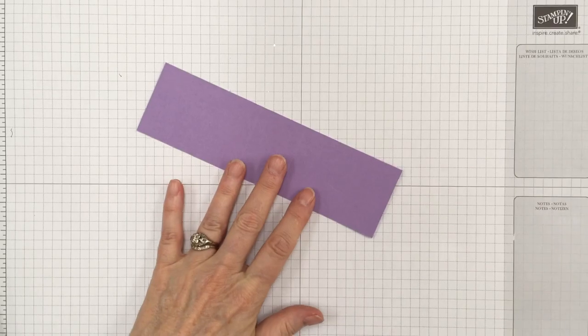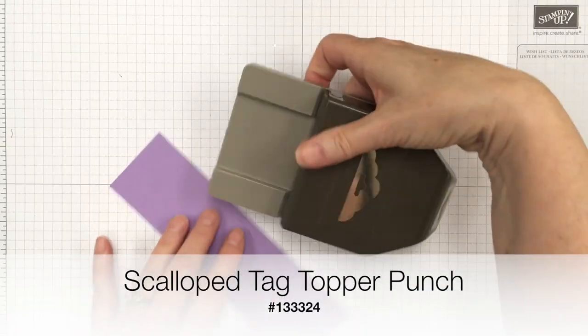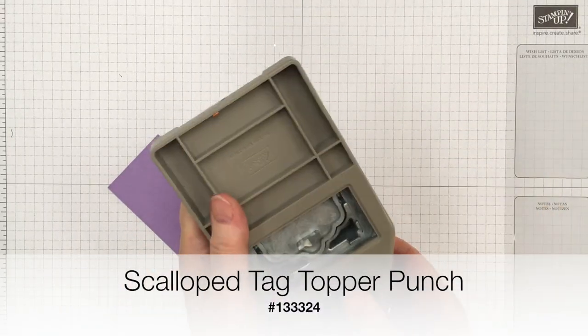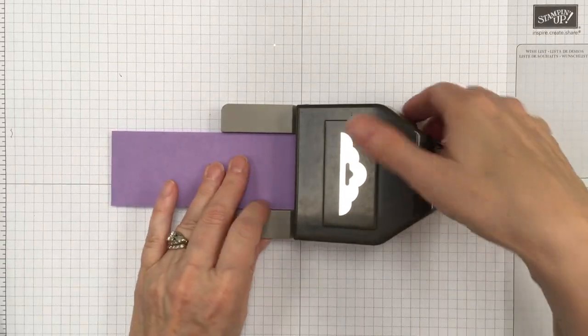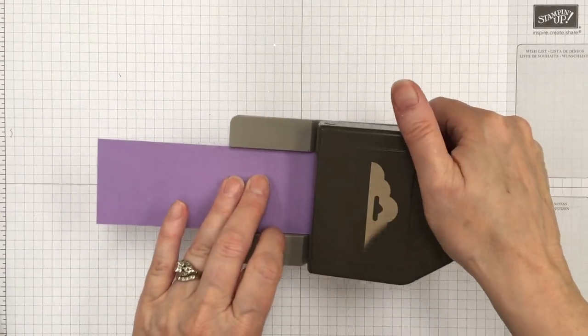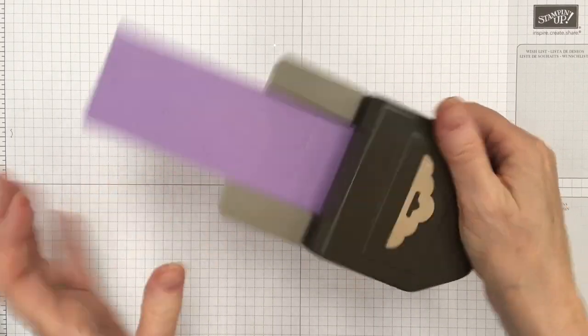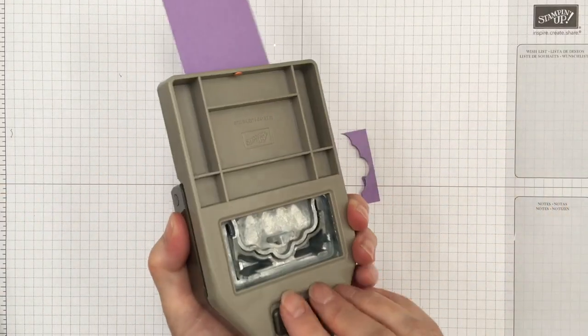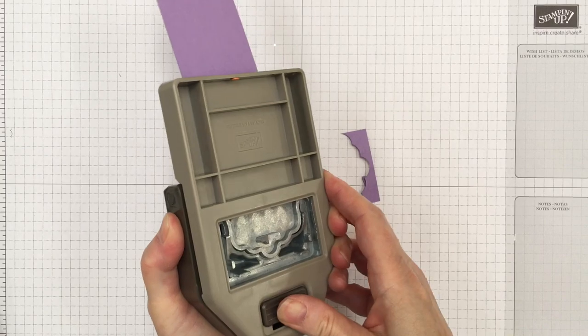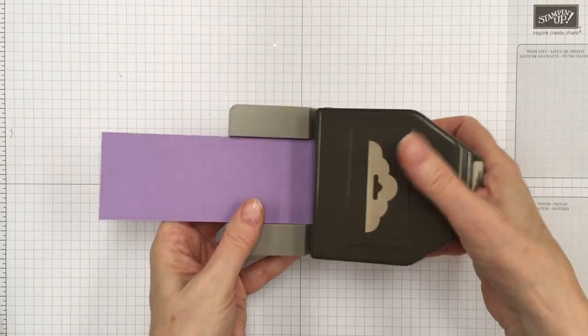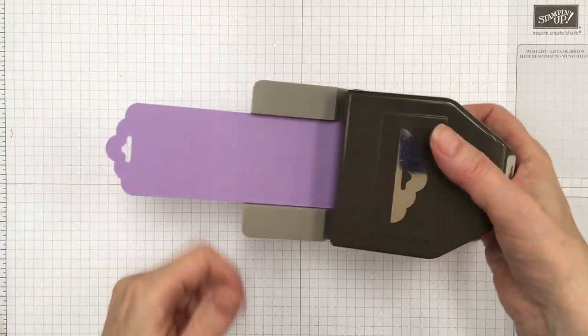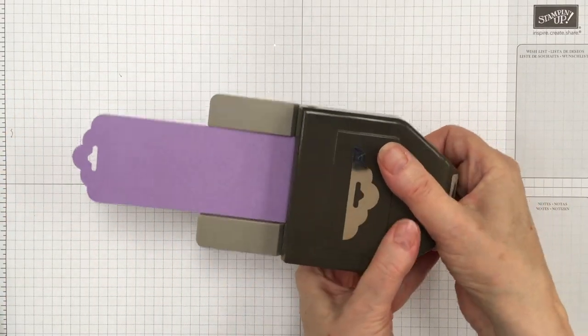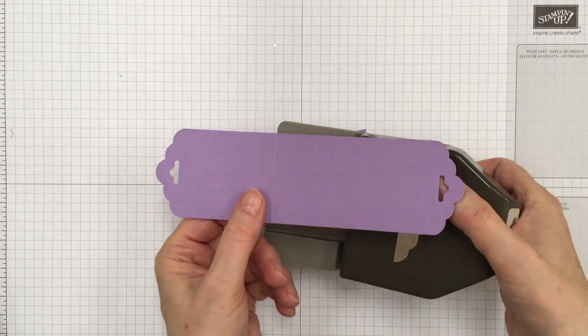And then what we're going to do is bring in the scallop tag topper punch. We're going to put each end inside and I'm going to hold this. Normally I wouldn't, but my table is very, it locked up on me. My table is very wobbly so I'm just going to hold that.